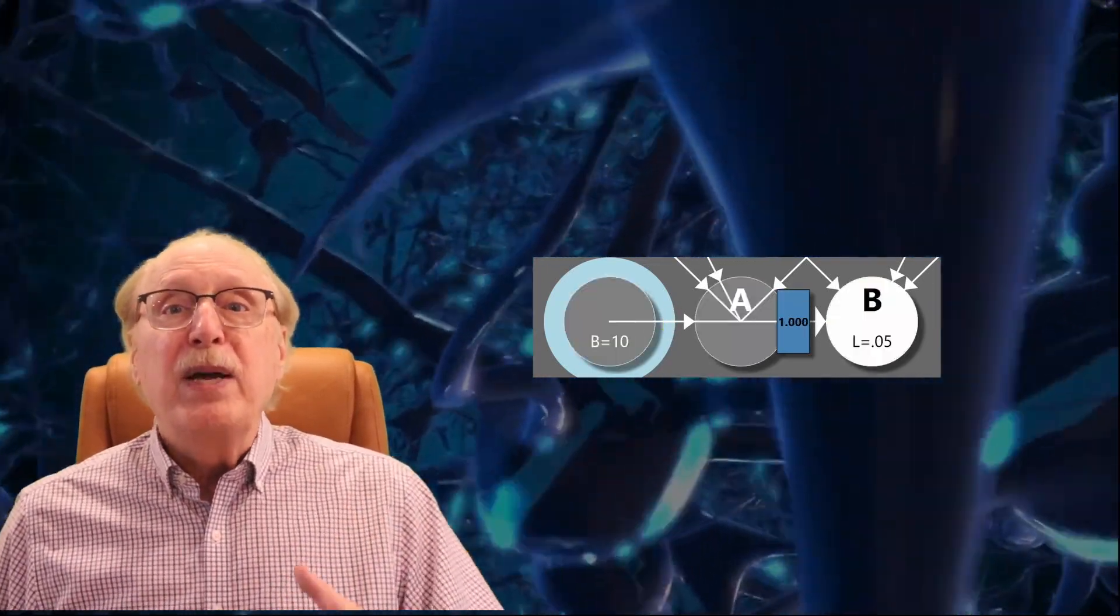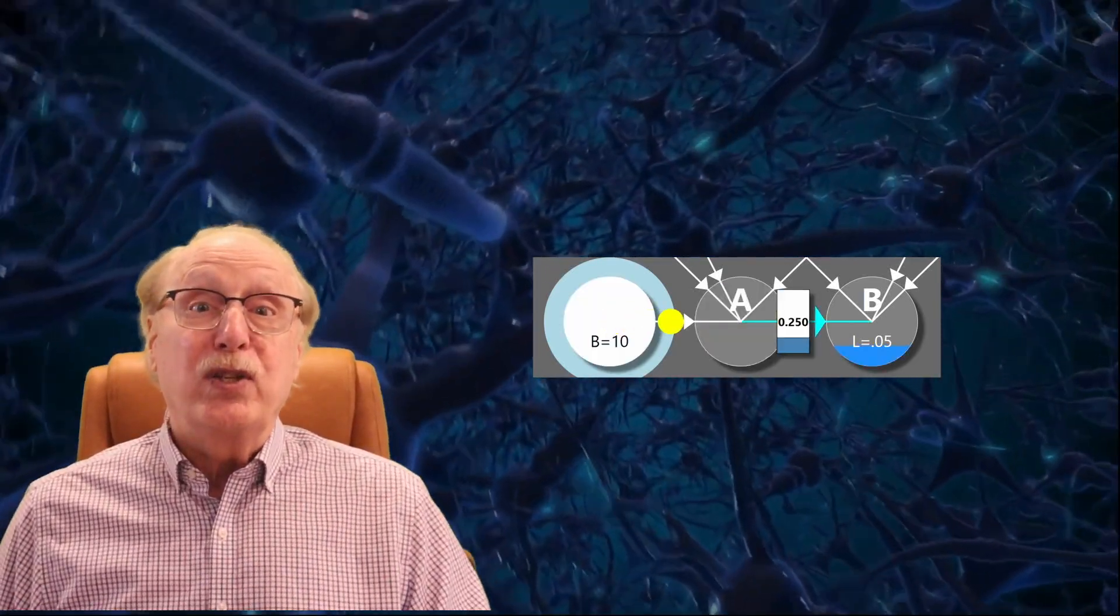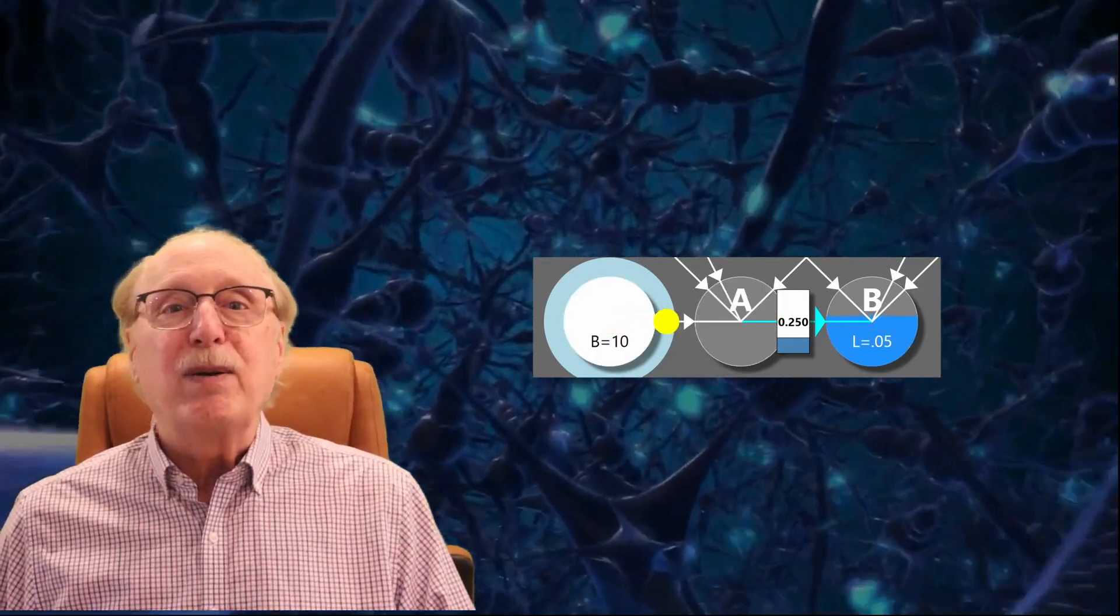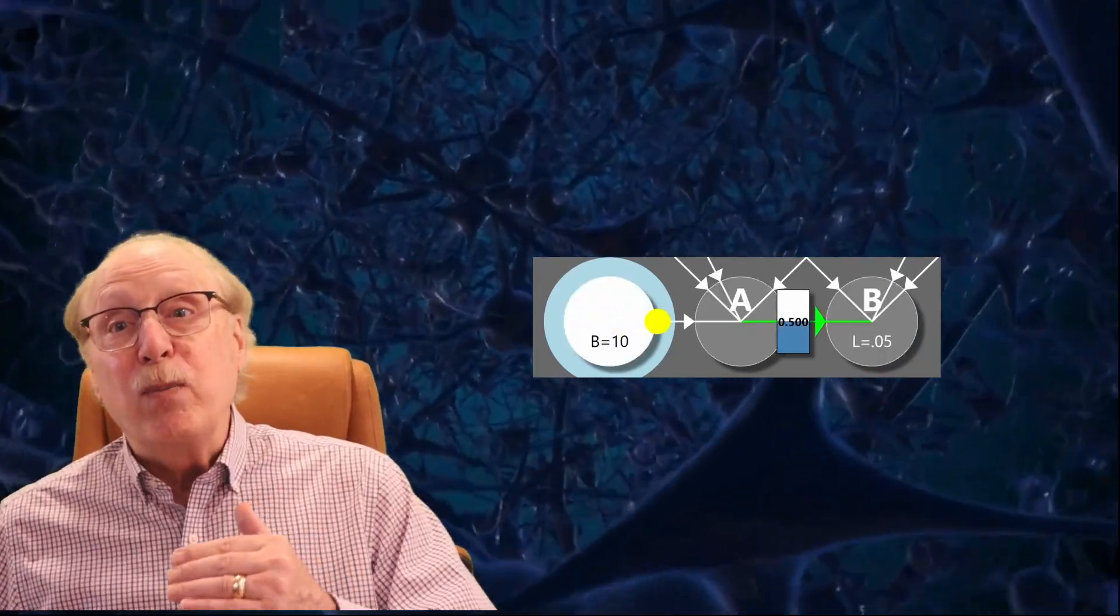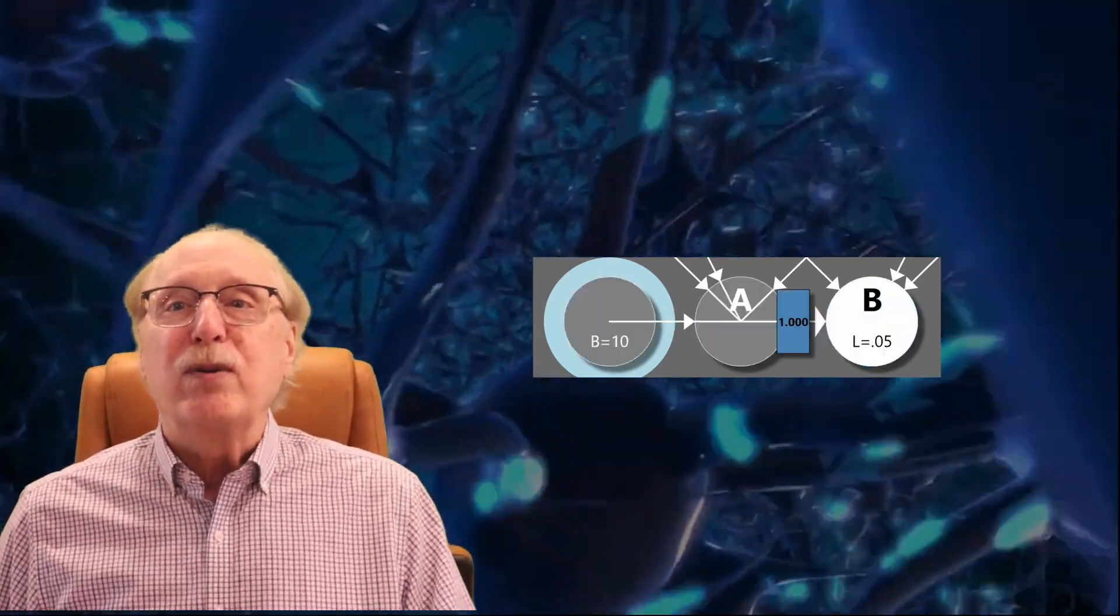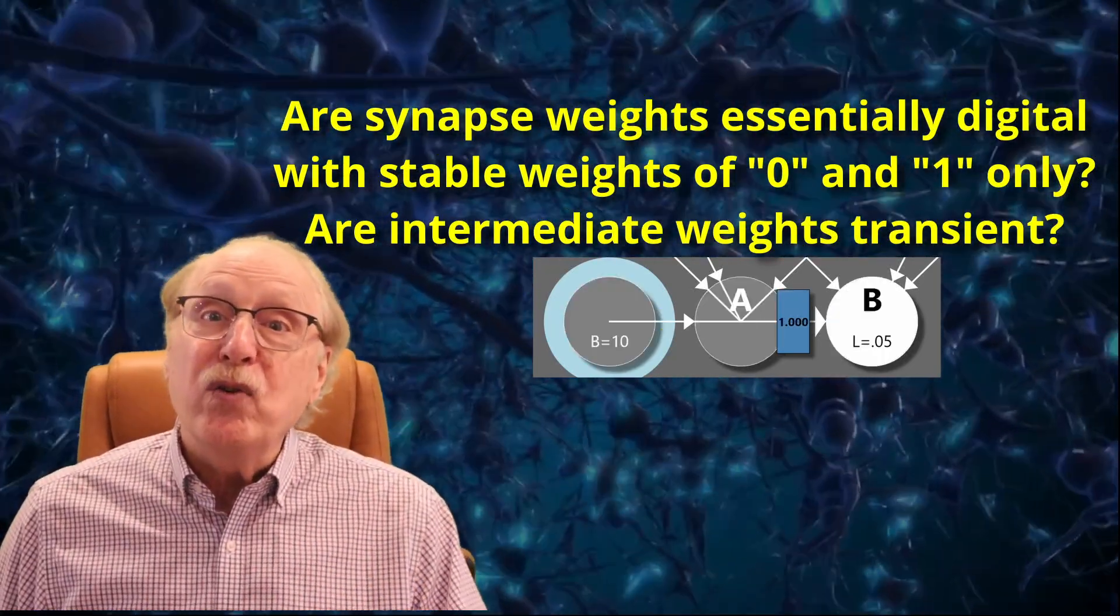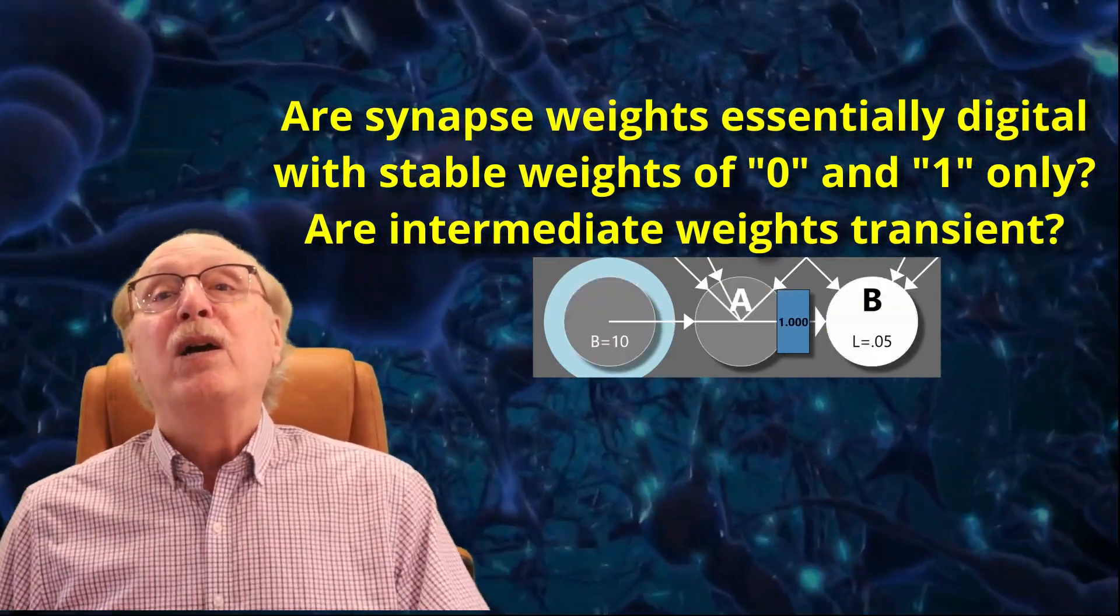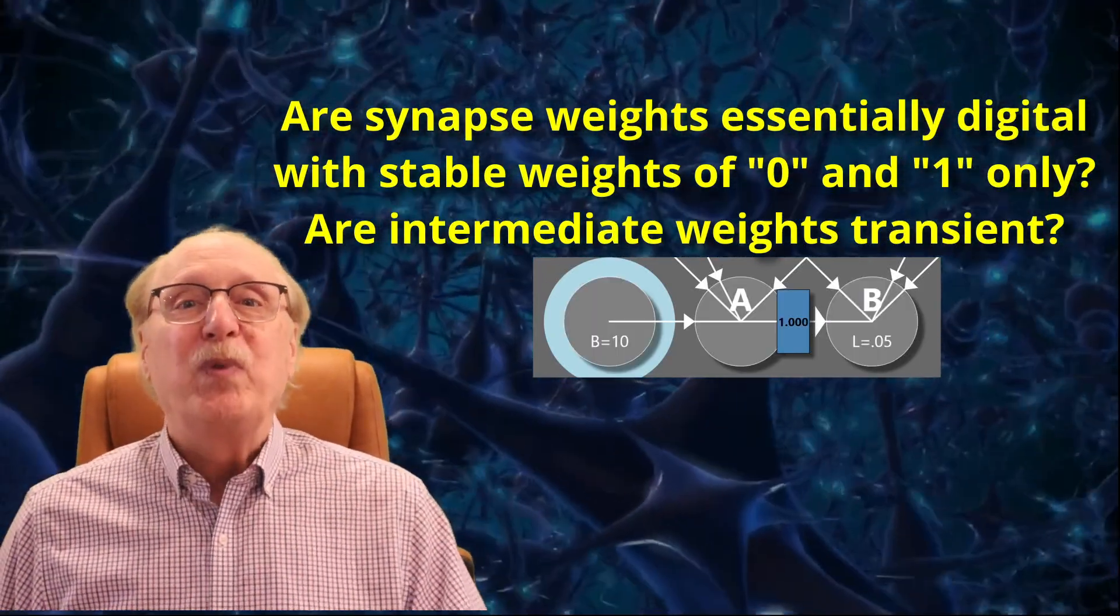The minimum, the maximum, and a few values in between. At the high end, any firing will cause the synapse to migrate to its maximum, so all useful weights must be lower. At the low end, the weight will be too small for the synapse to have any influence on the firing of B. In between, there aren't very many discernible weights. In the last video, I mentioned that neurons are essentially digital. Perhaps synapses are essentially digital too. What do you think?